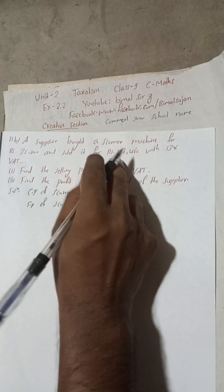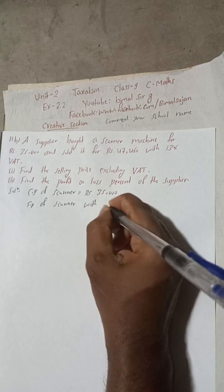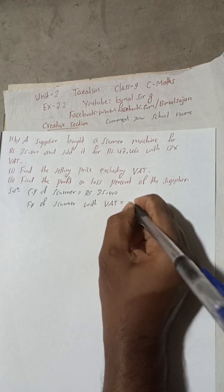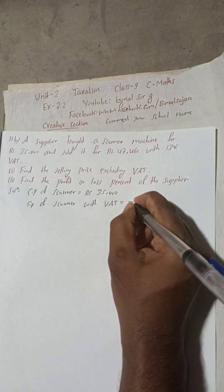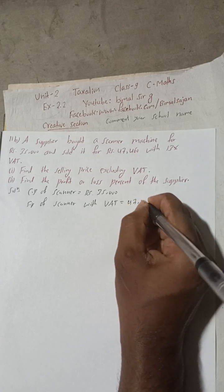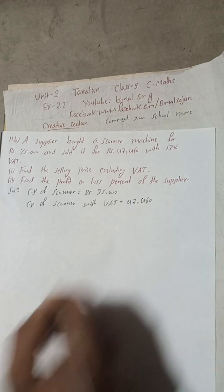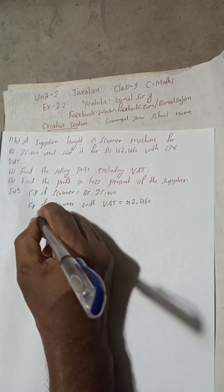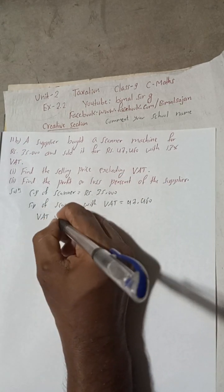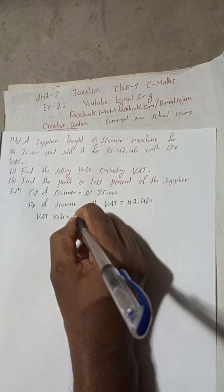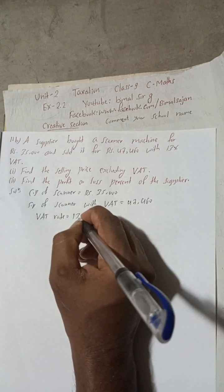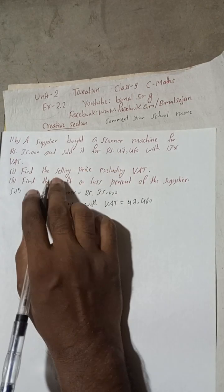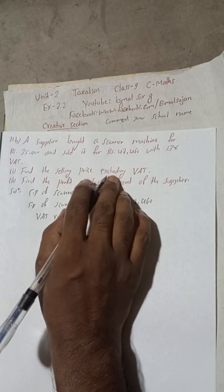With VAT, this is with VAT, is here how much? 47,460. Now VAT rate is also given here, so rate of VAT or VAT rate is equal to 13%. Now let, this is to find the selling price excluding VAT, so selling price without VAT.